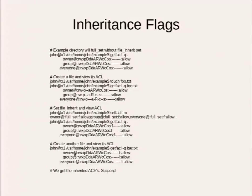I set file inherit on all the ACL entries. I create a bar.txt file, get the ACL on it, and here's the capital 'I' which indicates that these entries are all inherited. So this directory says inherit, inherit, inherit — file inherit. Create the file — inherit, inherit, inherit — and the permissions are equal. That's the way inheritance works.